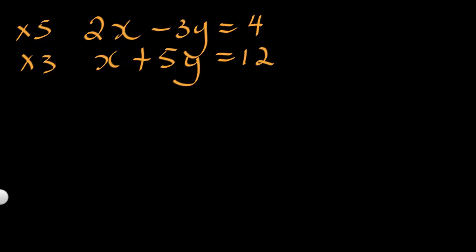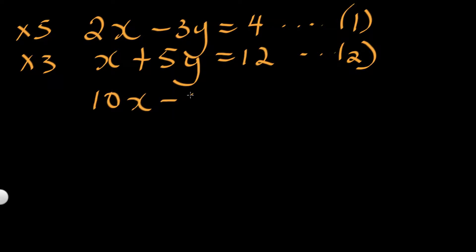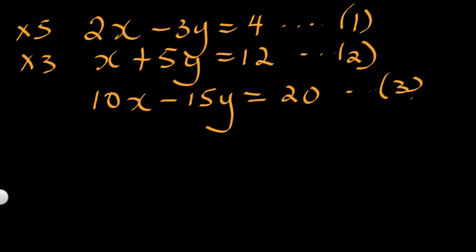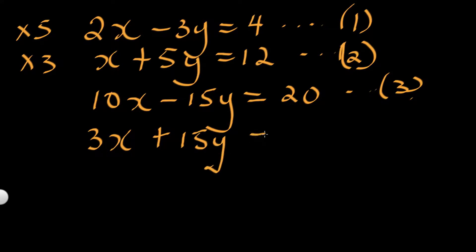I'm going to multiply equation 1 by 5. If I multiply equation 1 by 5, I get 10x minus 15y equals 20 — let me call this equation 3. Then multiplying equation 2 by 3, I get 3x plus 15y equals to 36 — 3 times 12 is 36. Let me call this equation 4.